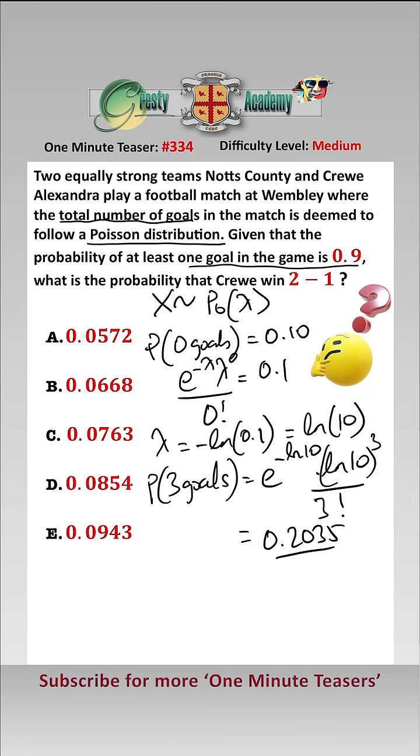Now, we can model crew winning 2-1 by the coefficient of c squared n to the 1 in the expansion of c plus n cubed, and that is equal to 3c2.